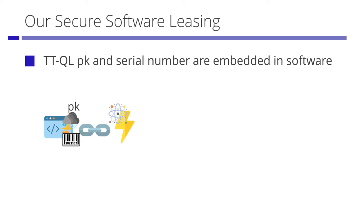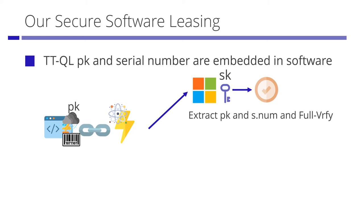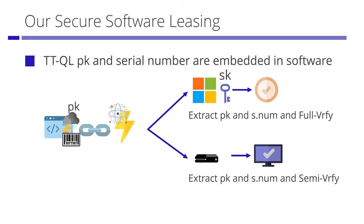The lessor generates a bolt and serial number, and embeds the serial number and the public key of two-tier quantum lightning into the software by watermarking. So the software is connected to the bolt. When software is returned, the lessee extracts the embedded public key and serial number and checks the quantum state part by full verification with the secret key. When a lessee runs the software, they extract the embedded public key and serial number and check the quantum state part by semi-verification with the public key. Precisely speaking, we need a MAC to formally prove the security of our construction, but I omit it for simplicity in this talk.